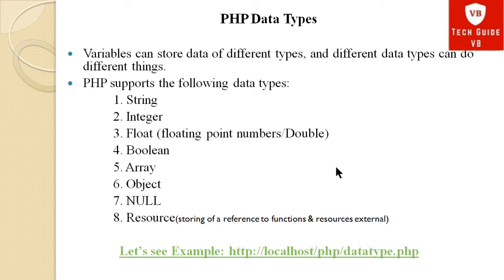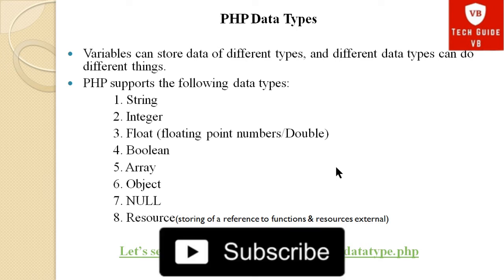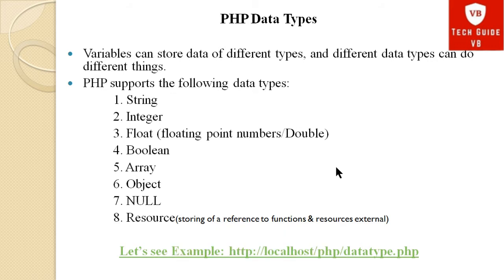The fifth data type is array — if you want to store array elements, you use the array data type in PHP, though arrays in PHP are quite different from other programming languages. The sixth is object — if you want to store an object as a data type, you use the object data type. The seventh is null — if a variable does not contain any value, you use the null data type. The eighth is resource, used for storing a reference to functions and external resources.